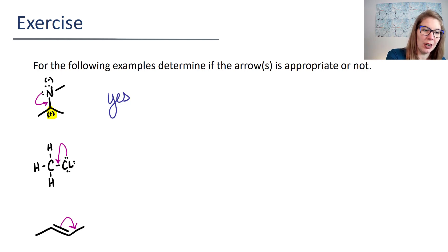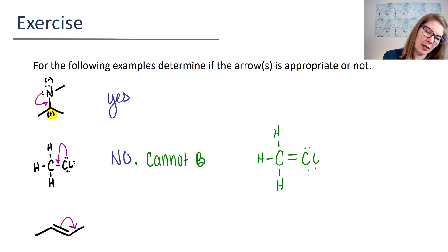For the second structure, nope, you can't do this. Why not? Because if you did, then your carbon would have a double bond between carbon and chlorine. What would happen is you would end up with a structure that looked like this. And your carbon would then have 10 electrons around it, which carbon cannot do. We're not breaking the octet. So cannot break octet.